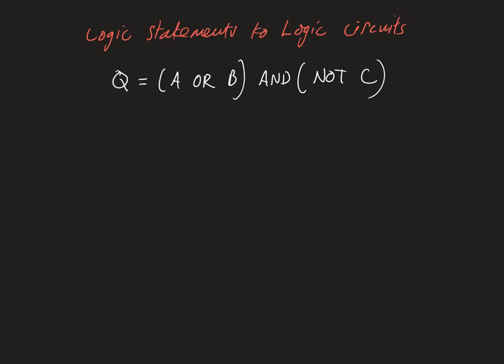We've got a logic statement here at the top, and we've got to turn this into a logic circuit. The thing to do first up is just figure out what we've got in the statement. Now the thing on the left-hand side is going to be the output. So we know in the actual logic circuit this is the thing we're going to see last.